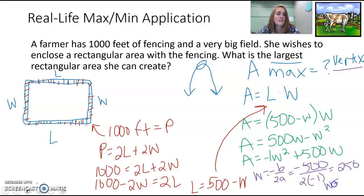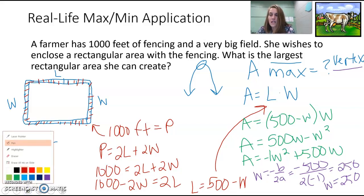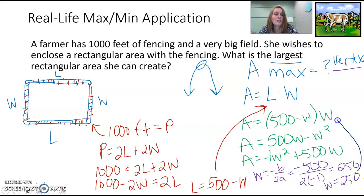So w is equal to 250, and I did not space things out well. But we have w is equal to 250, and we want to figure out what's the largest area she can create. Well, w equals 250, that's the width. To find the area that she can create, we can take that w equals 250, and we can plug it back in up here.